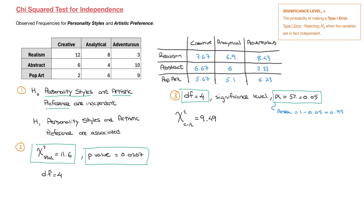That brings us to the fourth and final step, in which we compare our chi-squared statistic to the critical chi-squared value to draw our conclusion. Put simply, if our chi-squared statistic is greater than the critical chi-squared value, then we reject the null hypothesis and accept the alternative hypothesis. Since 11.6 is greater than 9.49, our chi-squared statistic is greater than the critical chi-squared value, and so we reject H₀. In context, there is sufficient statistical evidence to state that personality styles and artistic preference are not independent — in other words, they are associated.